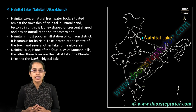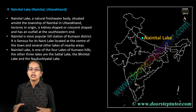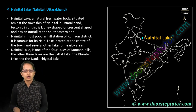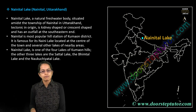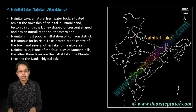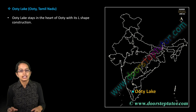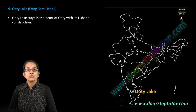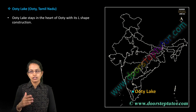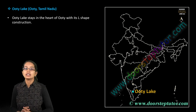Nainital has the Naini Lake, which is part of a group along with Sattal, Bhimtal, and Naukuchiatal — some of the major lakes located in the region of Uttarakhand. The last is Ooty Lake in Tamil Nadu, a very important location. It is an L-shaped lake with many tourist attractions.